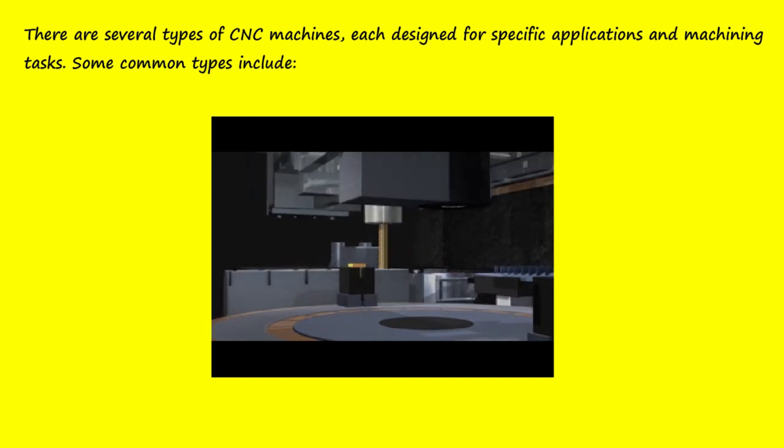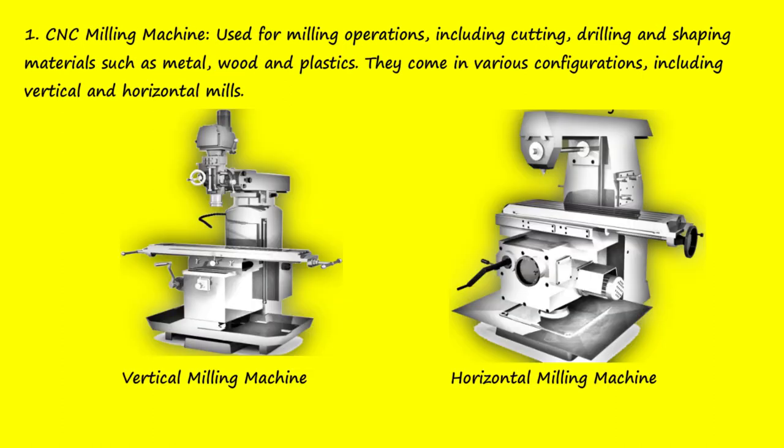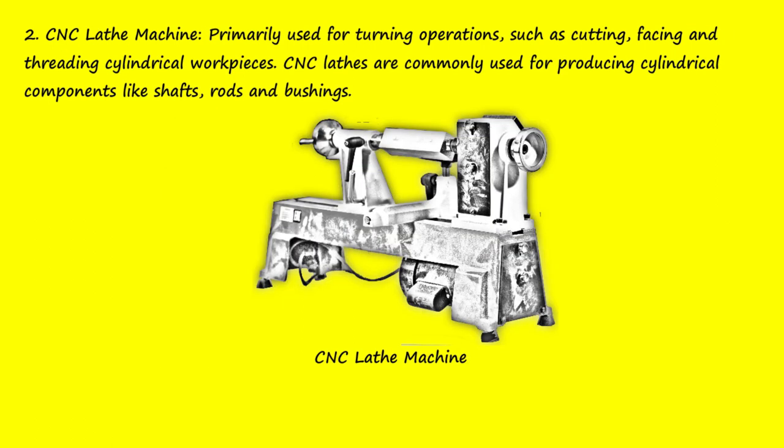Some common types include: 1. CNC Milling Machine — used for milling operations including cutting, drilling, and shaping materials such as metal, wood, and plastics. They come in various configurations, including vertical and horizontal mills.